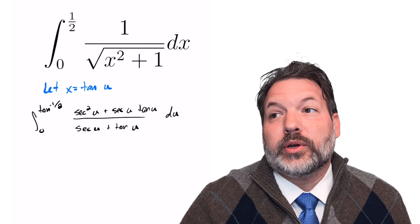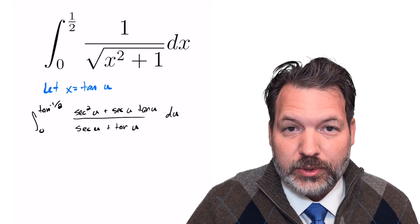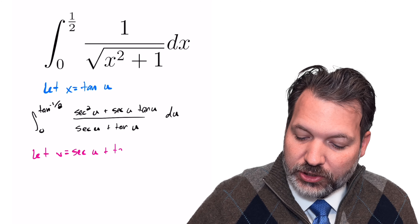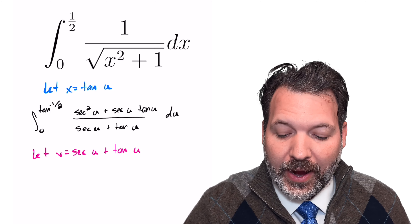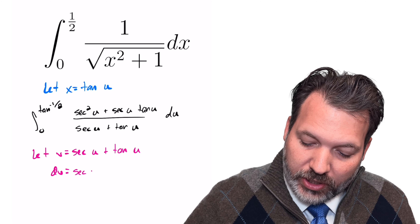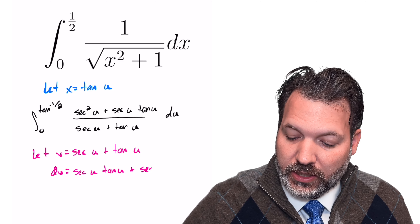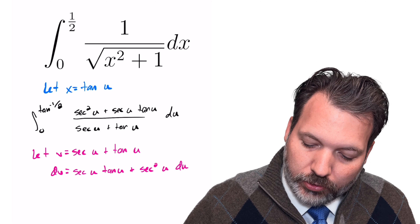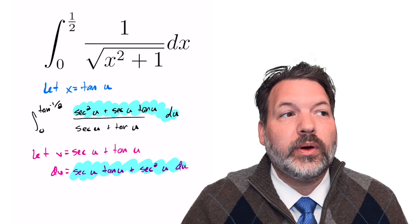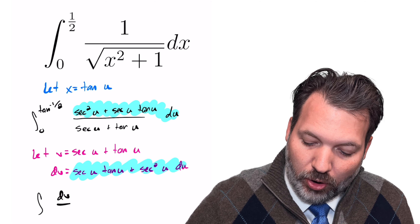Now we can do what would normally be u-substitution, but since we've already used u, we'll do v-substitution instead. If we let v equal secant u plus tangent u — the denominator of that fraction — then dv equals the derivative of secant u, which is secant u tan u, plus the derivative of tangent u, which is secant squared u, all times du. That's exactly the same as the numerator we created, meaning we can set this up as dv over v.